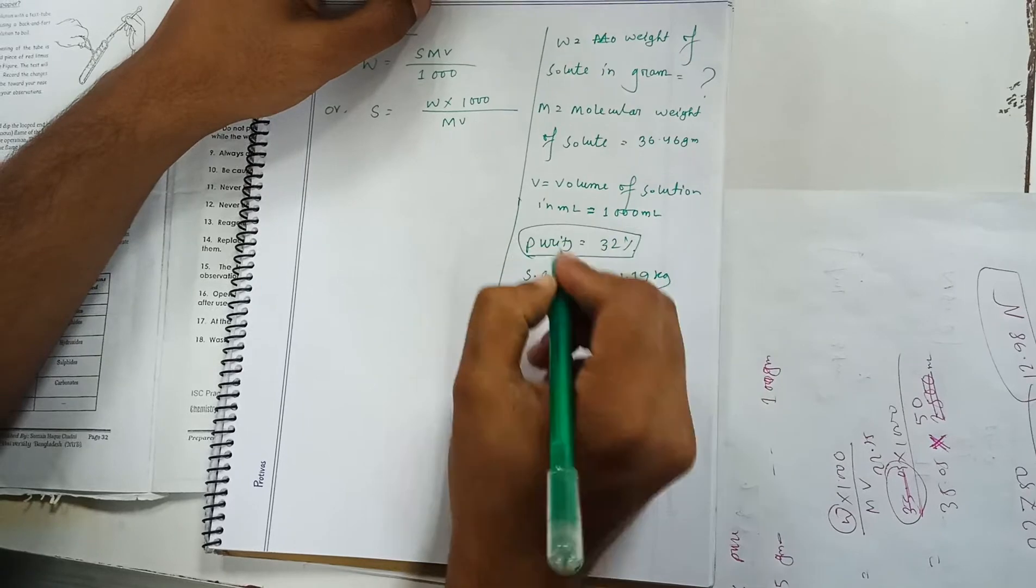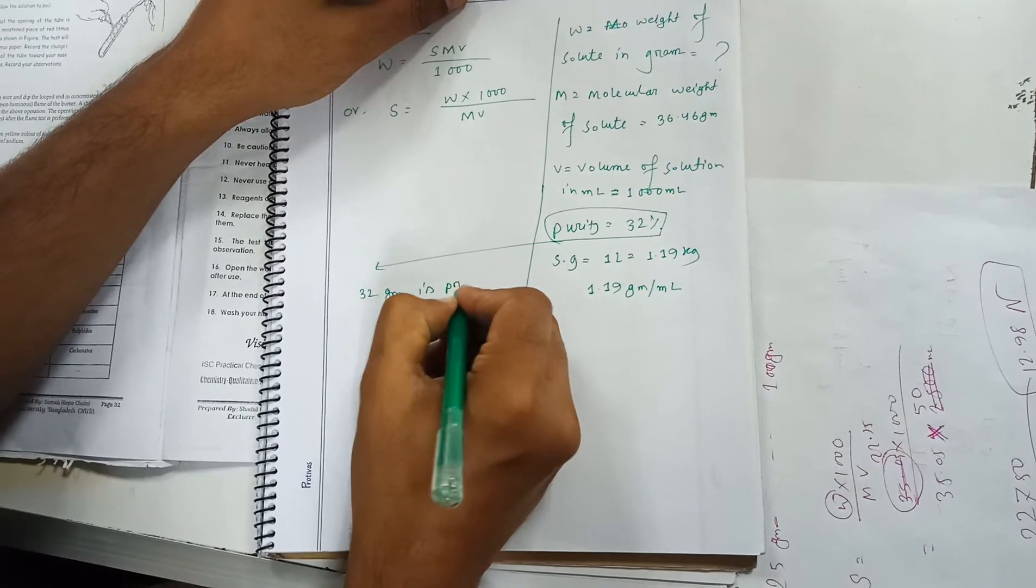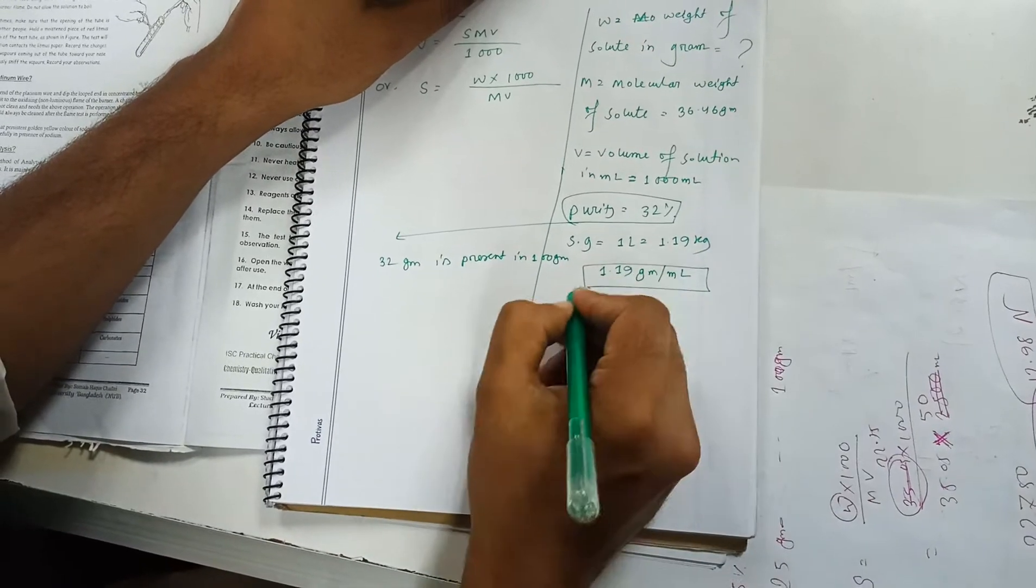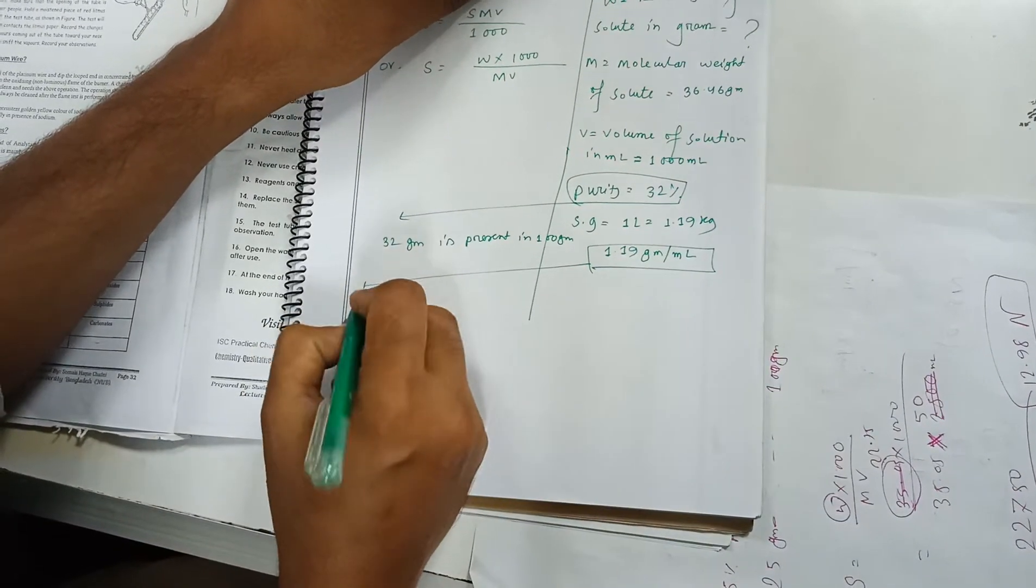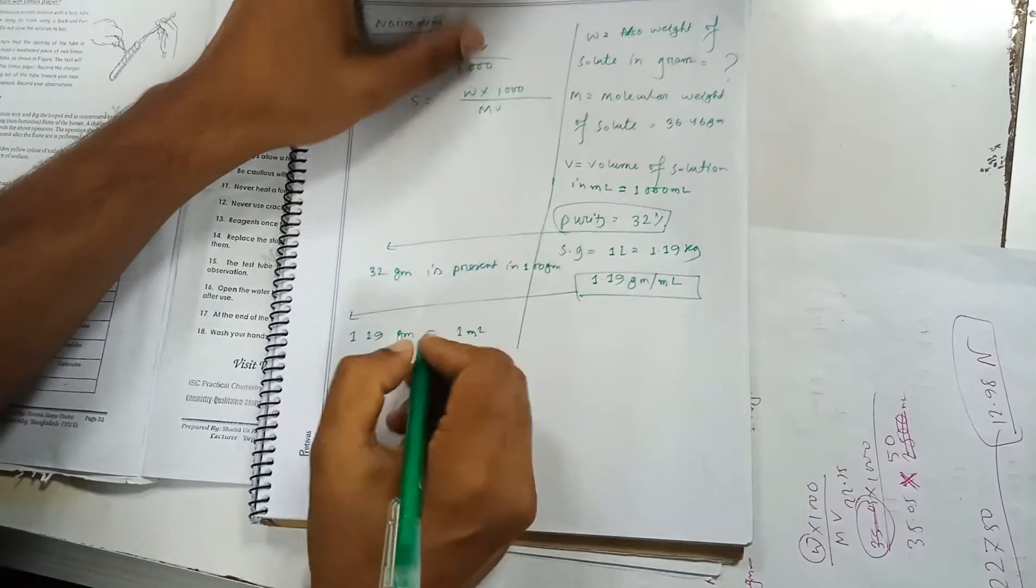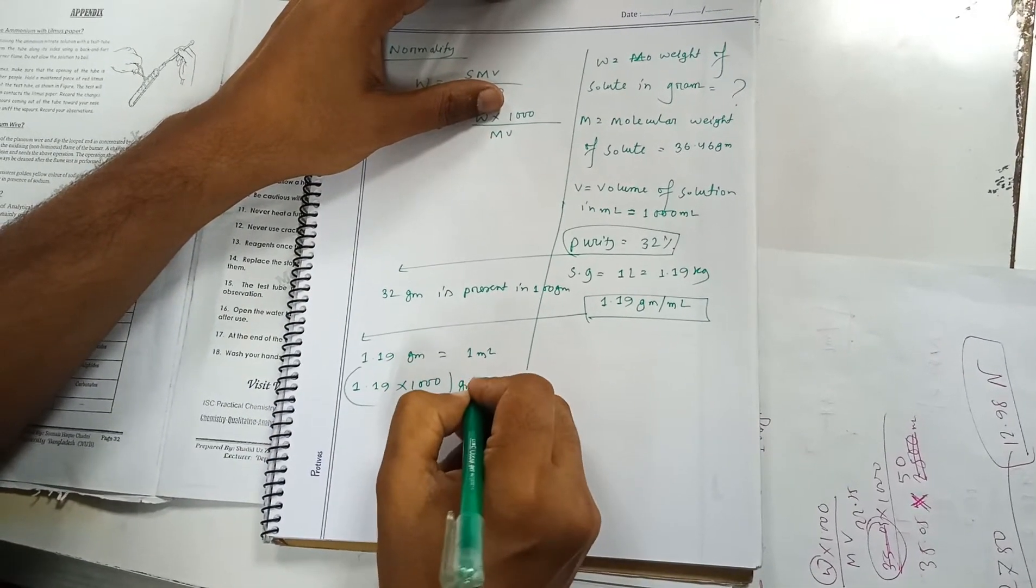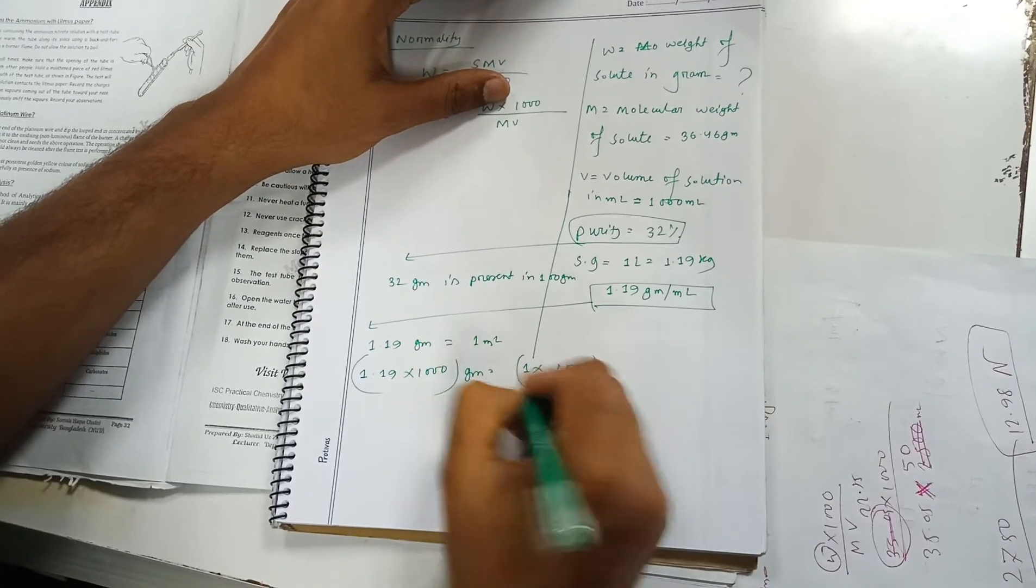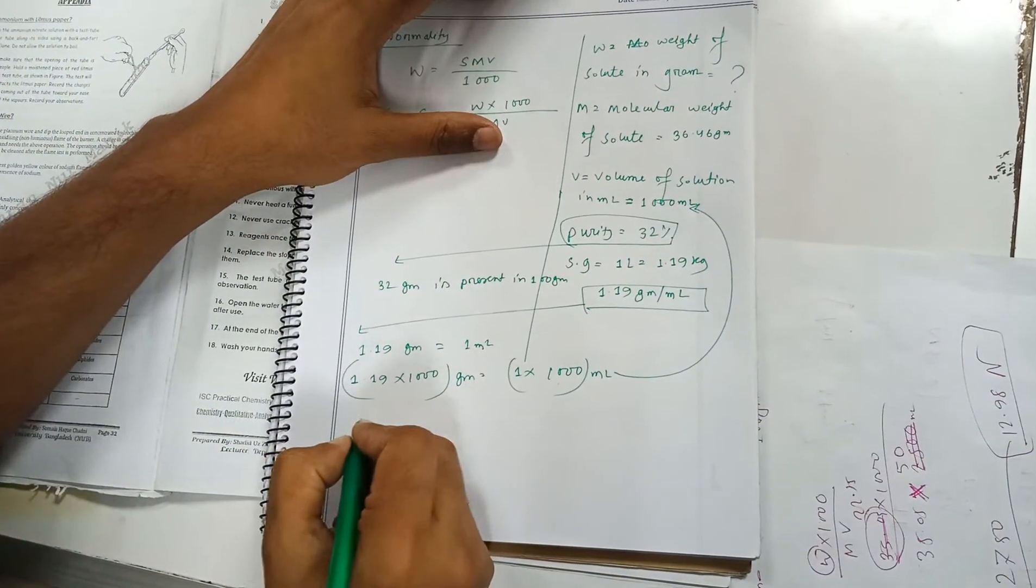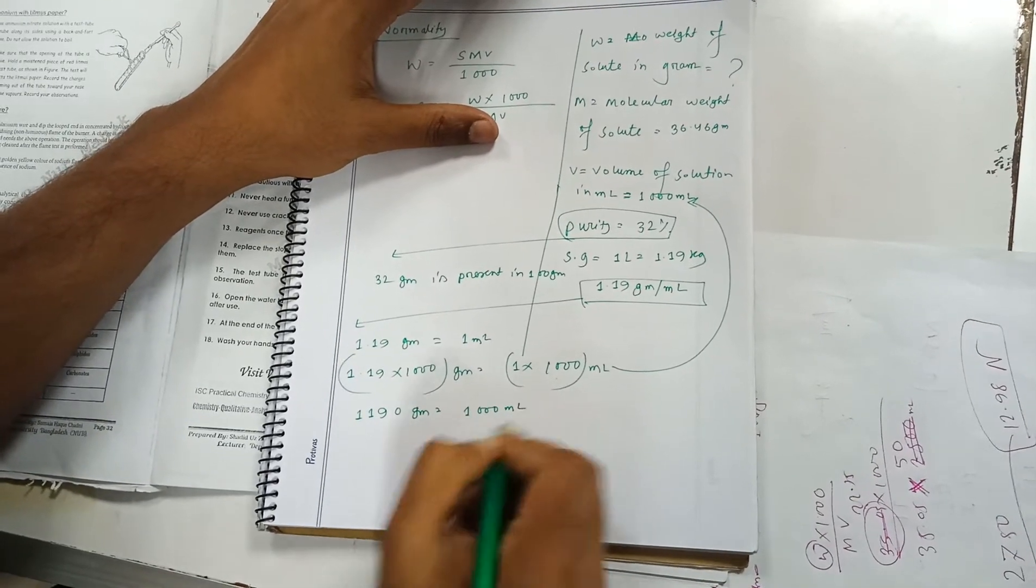The purity is 32%, that means 32 grams is present in 100 grams. And the specific gravity is 1.19 grams per ml, that means 1.19 grams equals 1 ml. We have taken 1000 ml which equals 1 liter. So 1190 grams equals 1000 ml.